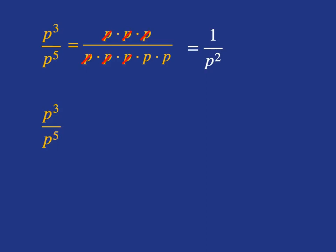But if we again apply the rule we've established for division, it would be p to the 3 minus 5, which is p to the power of negative 2. So to keep things consistent, p to the negative 2 equals 1 over p².